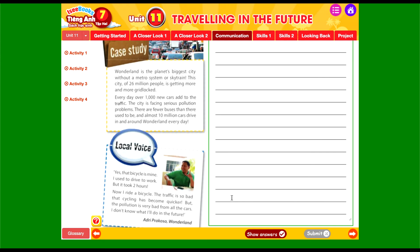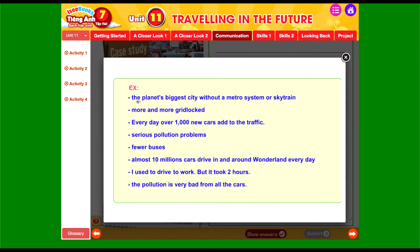Như vậy có một số vấn đề được đề cập trong bài. Đó là: 'The planet's biggest city without a metro system and skytrain' — không có hệ thống tàu điện ngầm hoặc tàu trên không. 'More and more gridlocked' — ngày càng đông đúc, chật chội hơn. Mỗi ngày có 1,000 xe tham gia giao thông. Vấn đề ô nhiễm rất nghiêm trọng. Hầu như không có xe buýt. Khoảng 10 triệu xe tham gia giao thông mỗi ngày. Người dân từng lái xe đi làm nhưng mất đến 2 tiếng, và ô nhiễm ngày càng tệ hơn do sử dụng quá nhiều xe ô tô.